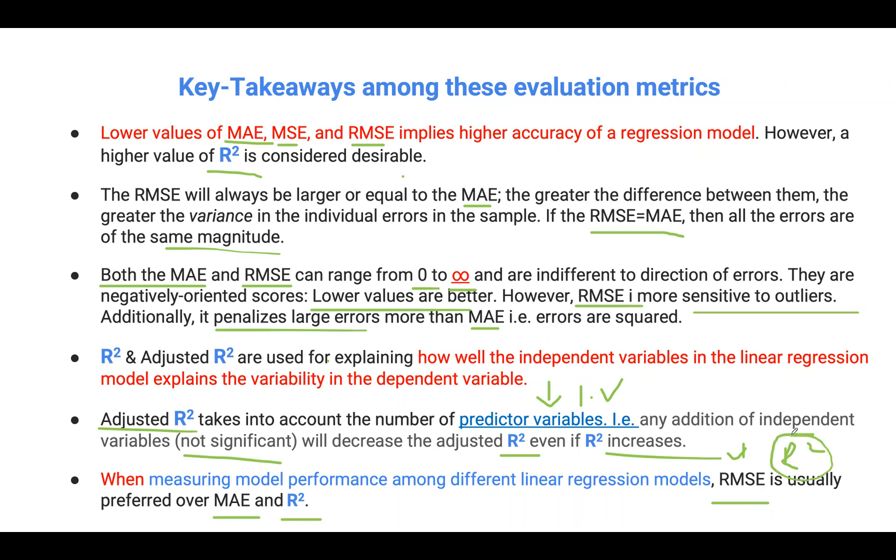R squared will tell us how well the predictor variables or the independent variables can explain the variation in our dependent or response variable.